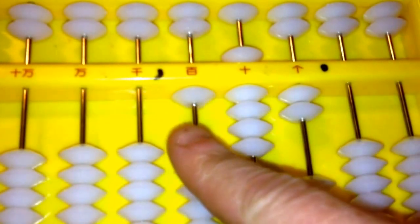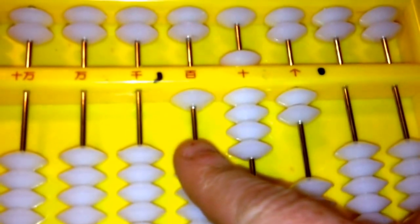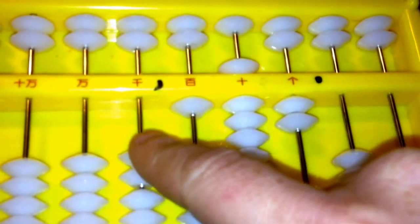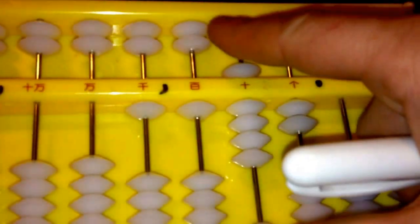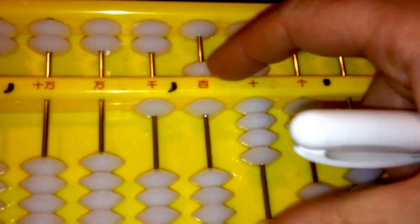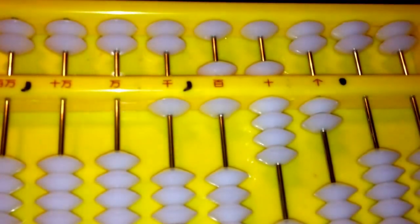So 3 times 5 is 15. So we're at our third digit from our decimal point. So 3 times 5 is 15. So a 10 here, and then because it's a 5, we're going to go ahead and pull down a heavenly bead.